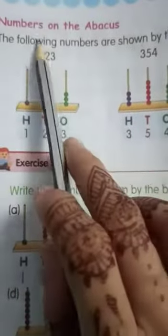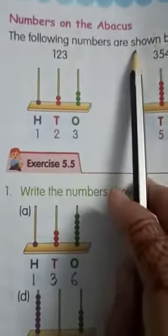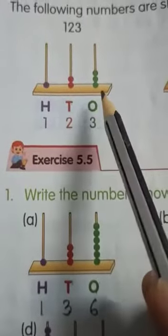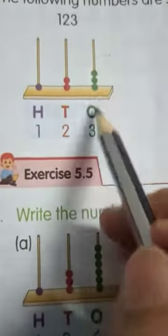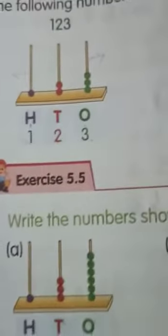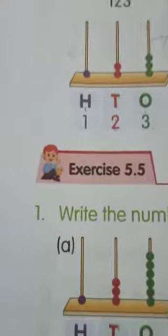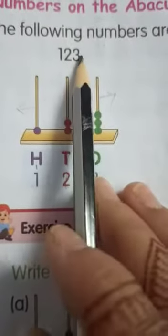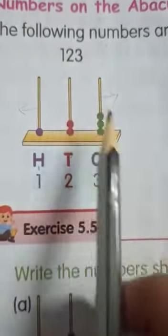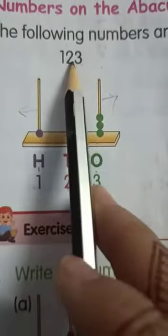The next topic is numbers on the abacus. You already know what an abacus is. In three-digit numbers, the right-hand side wire represents ones, the middle wire represents tens, and the left-hand side wire represents hundreds. If a number is given, you have to draw the beads on it. For example, the number 123: draw 3 beads on ones, 2 beads on tens, and 1 bead on hundreds.